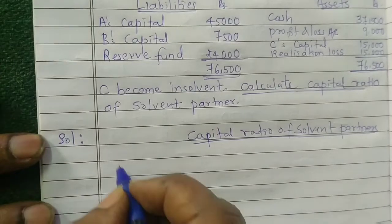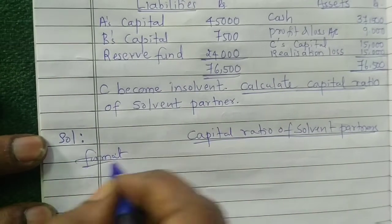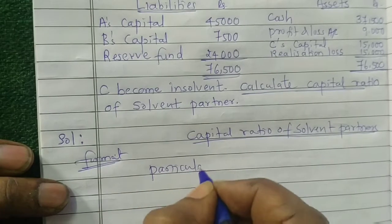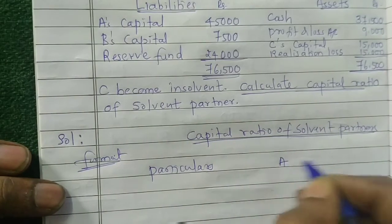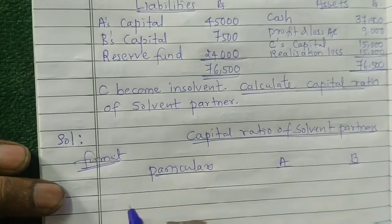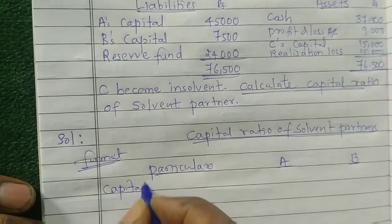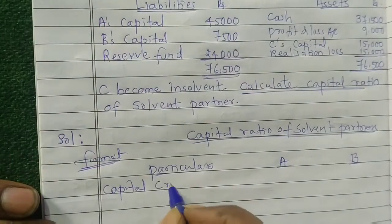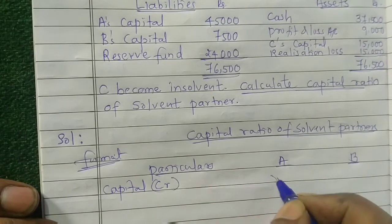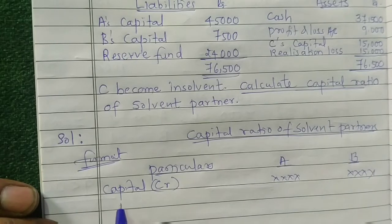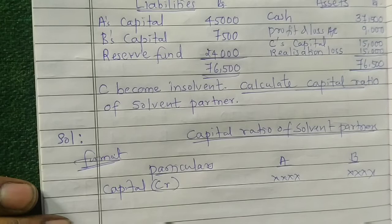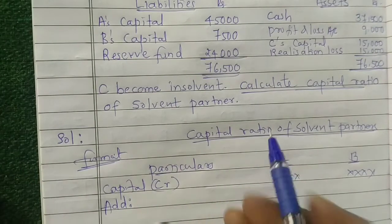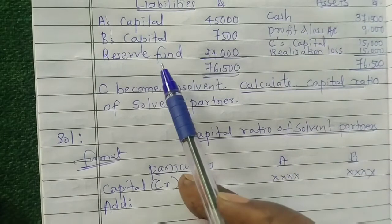The general format for calculating capital ratio of solvent partners requires us to list particulars for each solvent partner — in this case A and B. First, we take the credit side capitals of the solvent partners. Then we determine what to add and what to subtract from those capital figures.